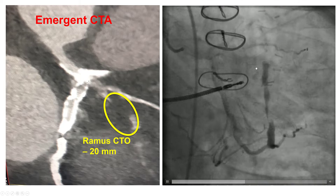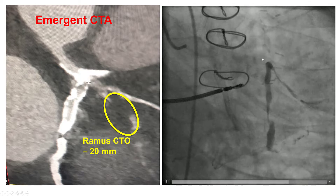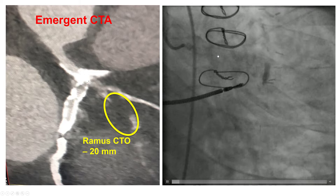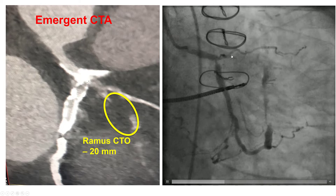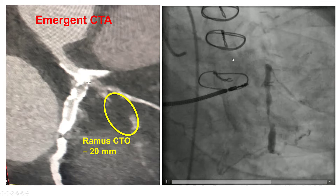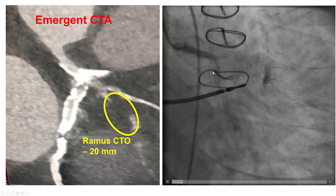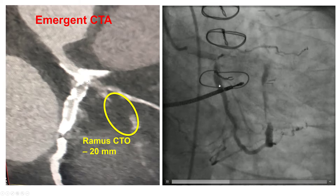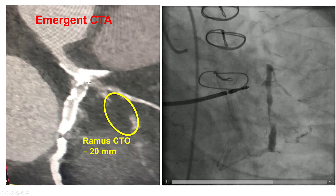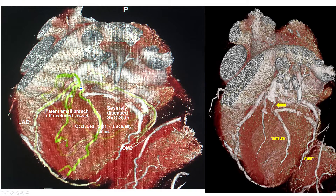So actually, this is not the 1st obtuse marginal branch, but instead this is the continuation of the RAMUS, which now has a nice tapered entry. This is a much easier lesion to treat than an unknown CTO of the circumflex. This can be seen better in the 3D reconstructions — this is the RAMUS, this is the CTO, this is the continuation of the RAMUS, and this is the 2nd obtuse marginal branch with a connecting SVG segment that has a severe lesion.